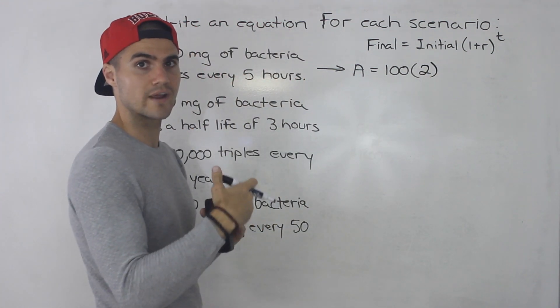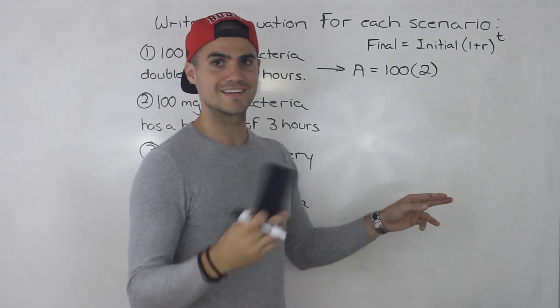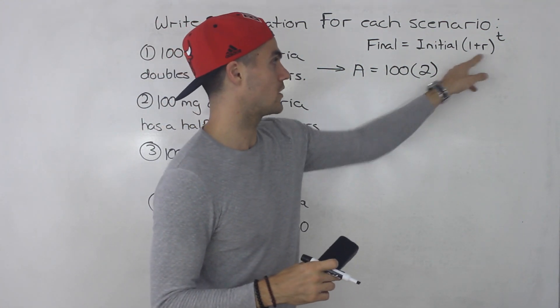If it's doubling, then its rate of growth is 100%. 100% in decimals is just one and one plus one gives us two.